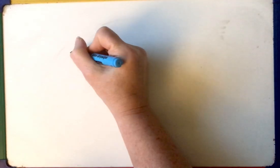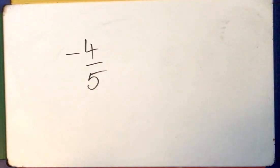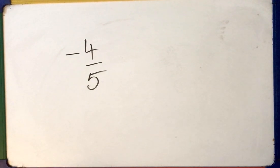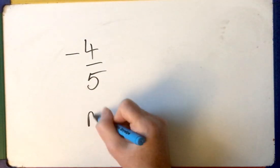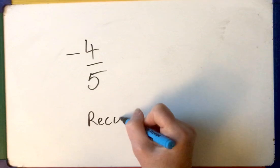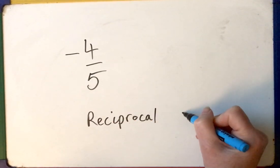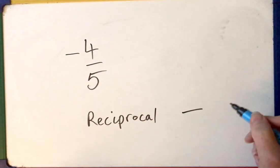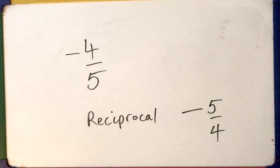Have a go at this one in your head. What's the reciprocal of negative four fifths? It's got to be a negative — so flip it, invert it: negative five quarters.